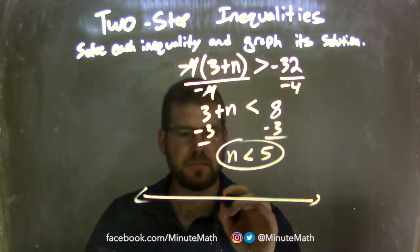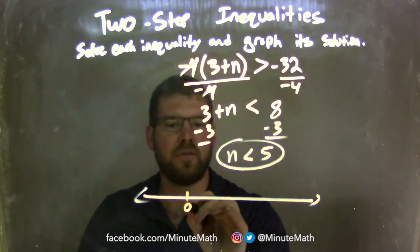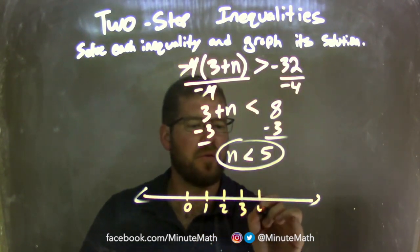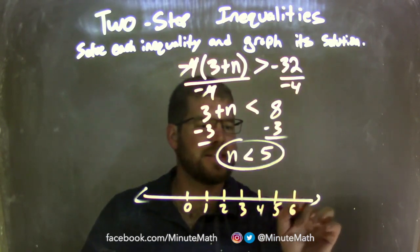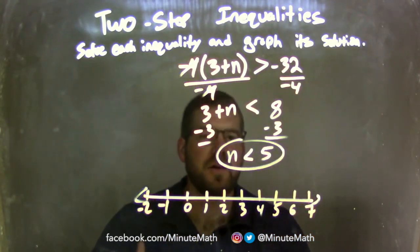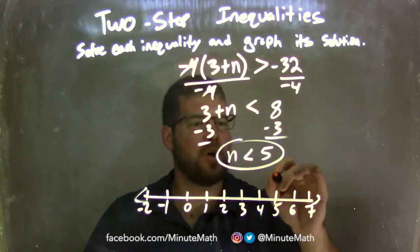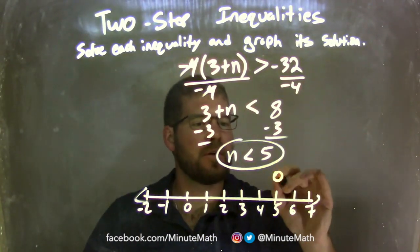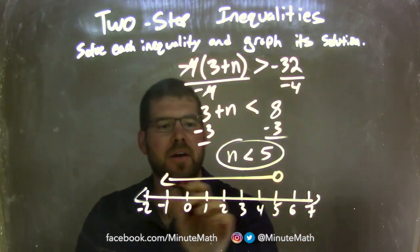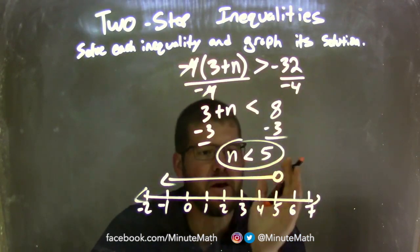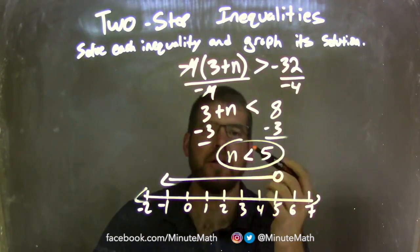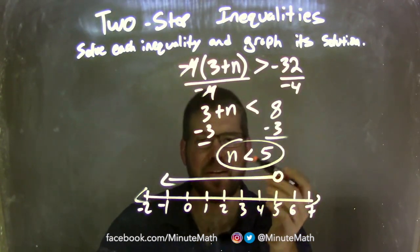Now I need to graph that. Going by 1s: negative 2, negative 1, 0, 1, 2, 3, 4, 5, 6, 7. Since N is less than 5, we have an open circle because it's not equal to 5, just less than. We draw an arrow to the left, showing all the values where N can be — all the values less than 5. Our graph now matches our inequality of N is less than 5.